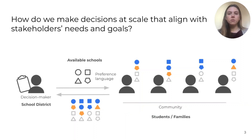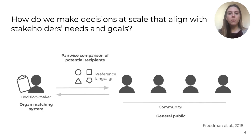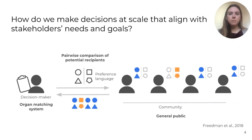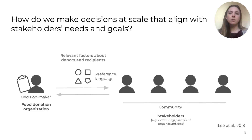Other preference-based systems use other kinds of preference languages. For example, Friedman et al. designed a system to align organ donation matching with the general public's values. In this case, they asked participants to make pairwise comparisons between potential recipients and use those preferences to weight donation matches. In a third example, Lee et al. worked with a food donation organization and various stakeholders like donor organizations, recipient organizations, and volunteers to build a model that would match donations to recipients in line with stakeholders' preferences. In this case, the preference language was a set of relevant factors about donors and recipients, and participants were asked to weight the relative importance of each factor.